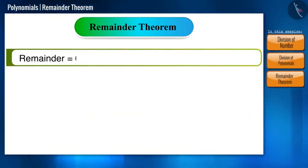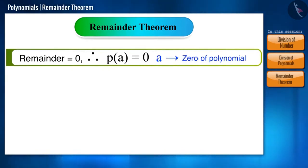And if the remainder is found to be 0, then p of a is equal to 0. And in such situations, a is the 0 of the polynomial.